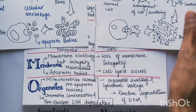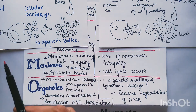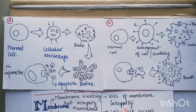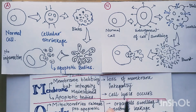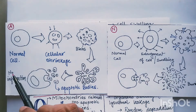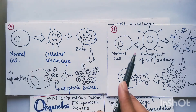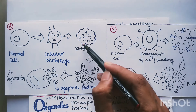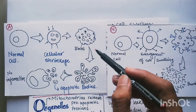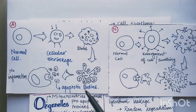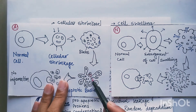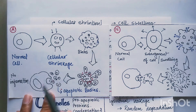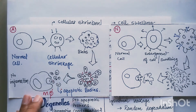This is for necrosis. We have already discussed apoptosis and necrosis. So in a normal cell, in apoptosis the cell gets shrunken — the size of the cell reduces and blebs are produced. These blebs continue to grow and are converted into small bodies called apoptotic bodies. These apoptotic bodies are taken up by macrophages or any neighboring cell.